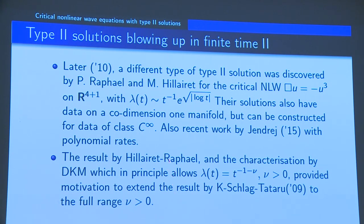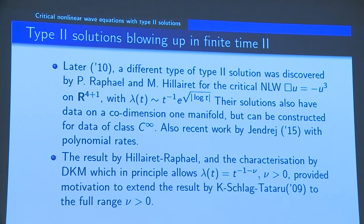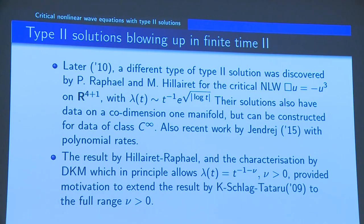The Hillaire-Raphaël result does not just give explicit examples but they also have an argument — or at least mention in that paper — that their solutions are co-dimensionally unstable. Again you get this kind of picture as in the theorem from 2004, but this time for type 2 blow-up solutions.